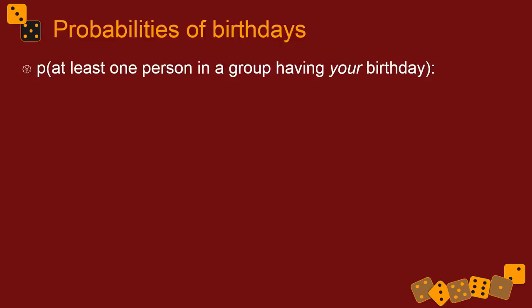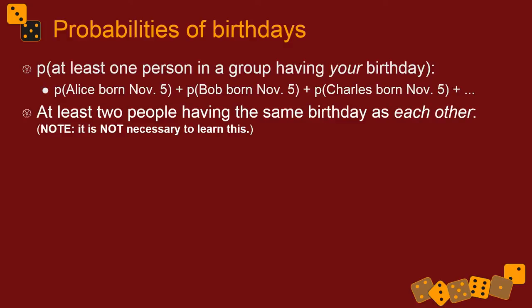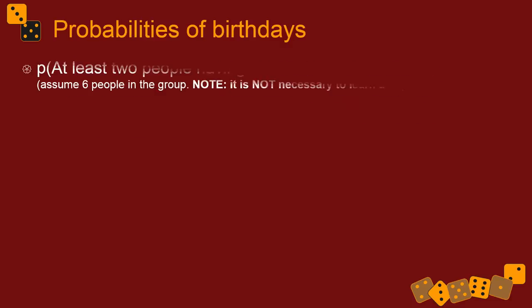The probability of at least one person in a group having your birthday is the probability of Alice in the group being born on your birthday, or Bob being born on your birthday, or Charles being born on your birthday. So you would add those probabilities together. That's easy. But at least two people having the same birthday gets more complicated.